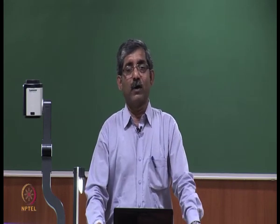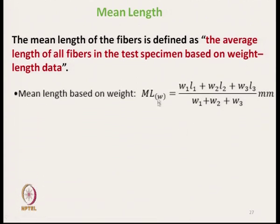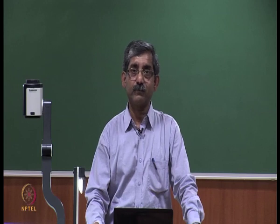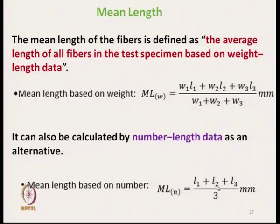Mean length of fibre is defined as the average length of all fibres in the test specimen based on weight-length data. The formula is: the sum of (Wi times Li) divided by the total mass W, where Wi is the mass of fibres with length Li. Mean length can also be calculated based on number — the sum of lengths L1, L2, L3, and so on, divided by the total number of fibres.